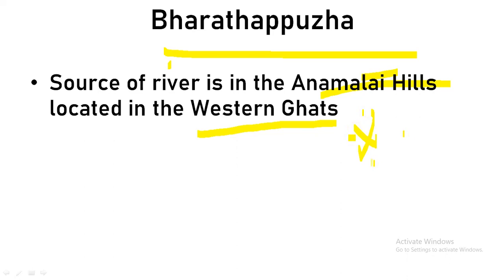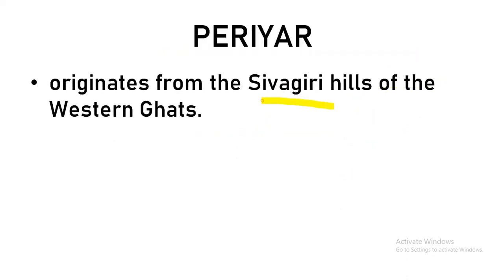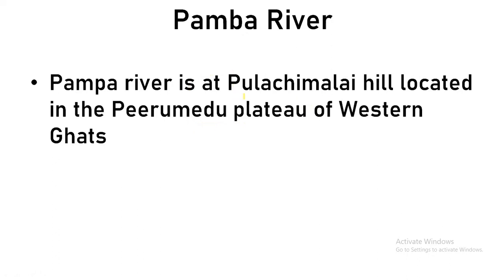Pamba river originates from Pulachimalai, which is in Peermade Plateau of the Western Ghats. So for Kerala rivers: Periyar from Anaimalai Hills, Periyar from Sivagiri Hills, and Pamba from Pulachimalai in Peermade Plateau. This completes the west flowing rivers — Luni, Sabarmathi, Mahi, Narmada, Taapti, and the small rivers Kalinadi, Vedithi, and Shravathi are important to know by name.